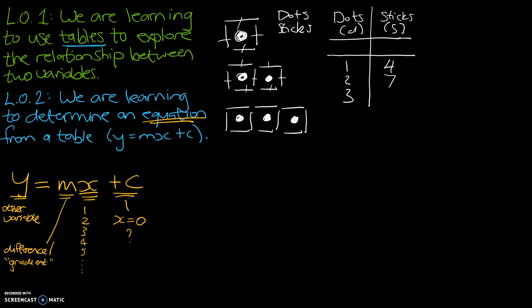And finally, let's have a look at the third one — counting up, we get ten sticks. So what we're doing here is exploring the relationship between these two variables, which is our first learning objective. We've identified a pattern, and we'll dive into it a bit more.